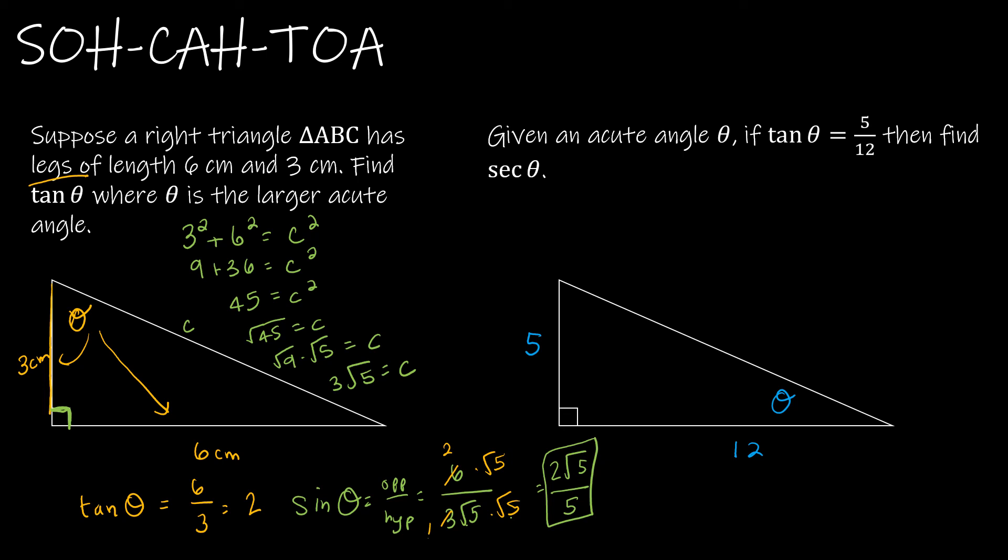Now I want to find secant of theta. Which one was secant? Secant is the inverse of cosine. And cosine is adjacent over hypotenuse. So secant is hypotenuse over adjacent. Just like last time, I'm going to have to determine the final side, the hypotenuse.